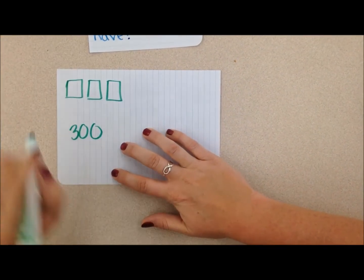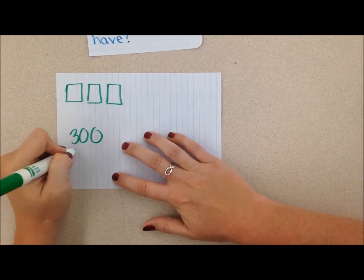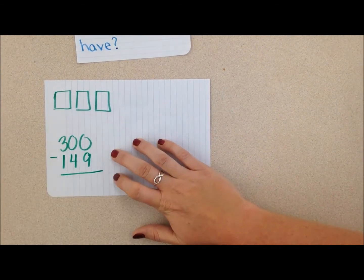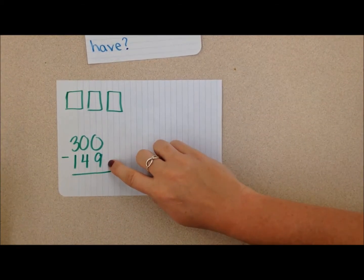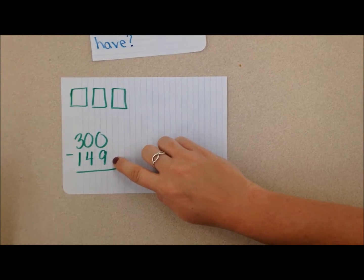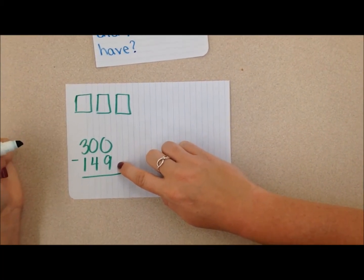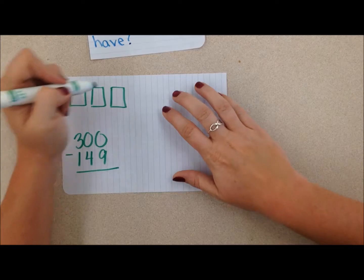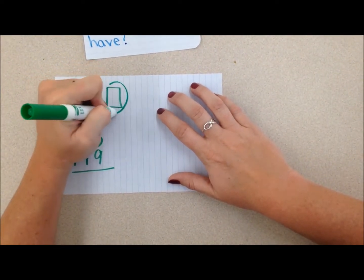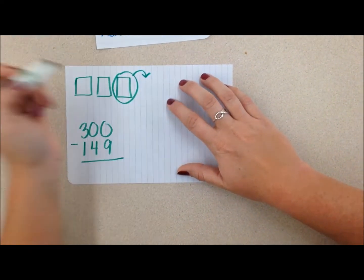We want to compare the difference between the green and red, so I'm going to subtract 149. But when I look here, I don't have any ones up here, but I do know that I can do some trading. So I'm going to trade this 100 for 10 tens.